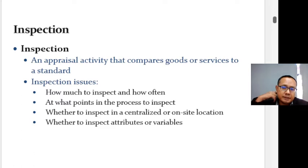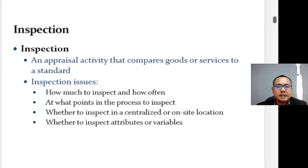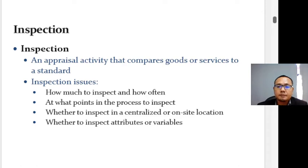In lean organizations, inspection is less of an issue because lean organizations place extra emphasis on quality in the design of both products and processes. To determine whether a process is functioning as intended, or to verify that a batch of raw materials or final products does not contain more than a specified percentage of defective goods, it is necessary to physically examine at least some of the items. The purpose of inspection is to provide information on the degree to which items conform to a standard.